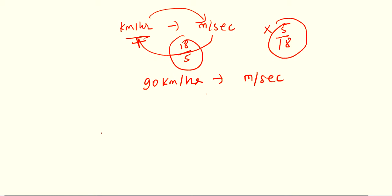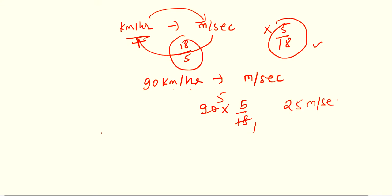For example, 90 kilometer per hour — you want to convert that to meter per second. So we write 90, then multiply by 5/18. 18 into 5 is 90, 5 into 5 is 25. So the required answer is 25 meter per second.